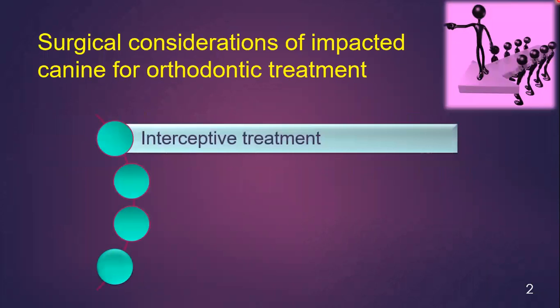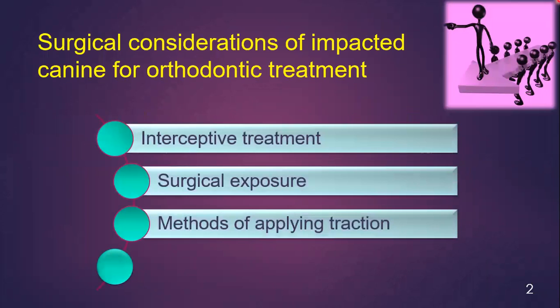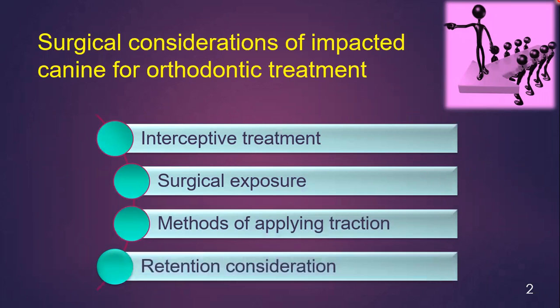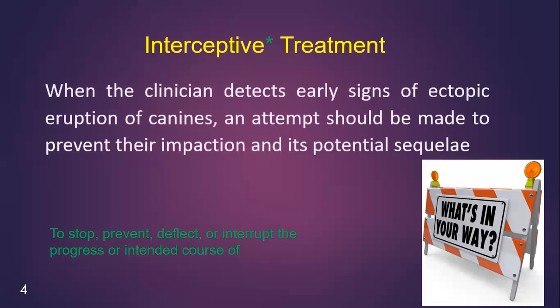For orthodontic treatment, we can consider interceptive treatment, surgical exposure, methods of applying traction, and retention consideration. Interceptive treatment means prevention of impacted maxillary canine. When the clinicians suspect that there is a chance of impacted maxillary canine, an attempt should be made to prevent its impaction. This attempt for the prevention of maxillary impacted canine is known as interceptive treatment.